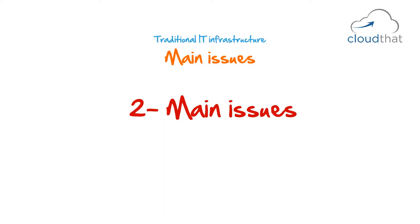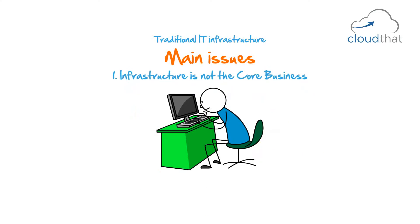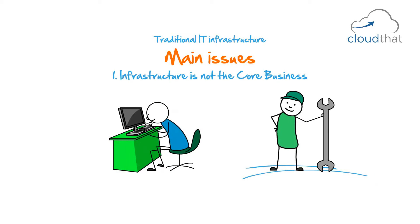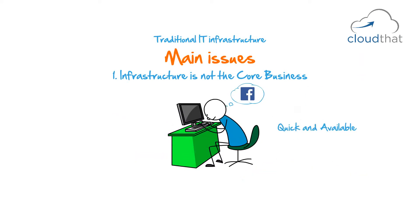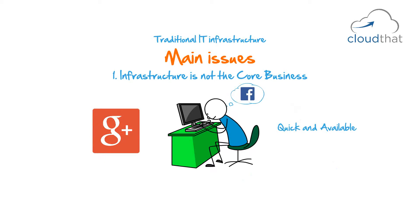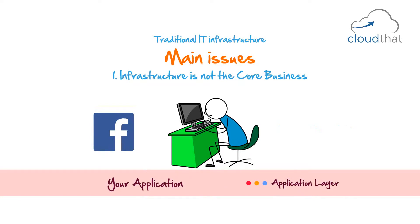There are two main issues with traditional IT infrastructure. The first is that infrastructure is not the core business. Your users do not care what the infrastructure is. You might wonder what kind of infrastructure Facebook uses to support their one billion users, but the average user — as long as Facebook is quick and available — doesn't care. Google Plus might have a better IT infrastructure, but users are not going to be interested in it just because of that. It is the application layer that the user cares about. Infrastructure can only cause issues for you if something goes wrong; as long as it is up and running, users don't really care.